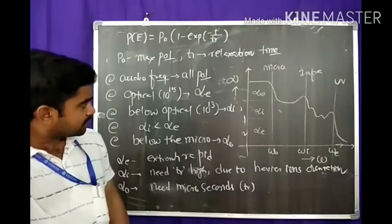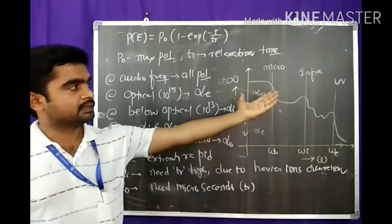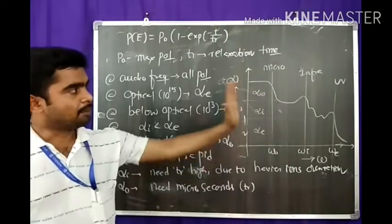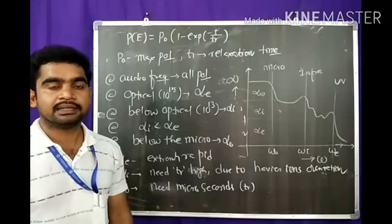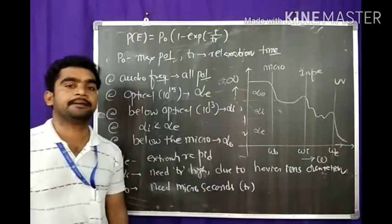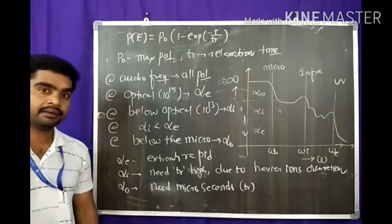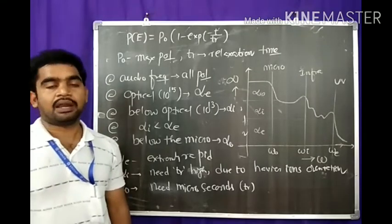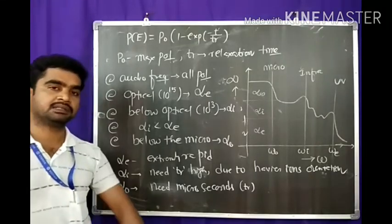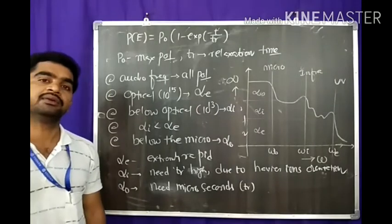To summarize: electronic polarization is possible up to the optical range, that is 10 to the power of 15 Hz, in the ultraviolet region. Ionic polarization exists up to the infrared region, less than 10 to the power of 15 Hz, around 10 to the power of 13 Hz. Orientational polarization is only possible up to the microwave region, and space charge polarization exists at audio frequency range.